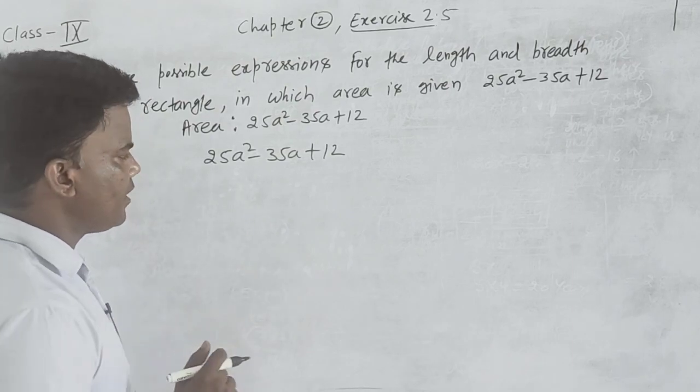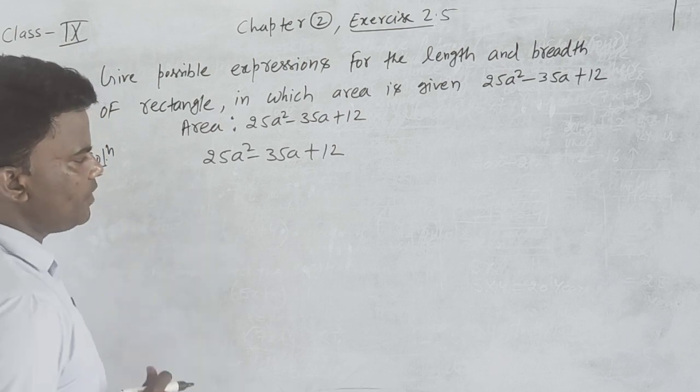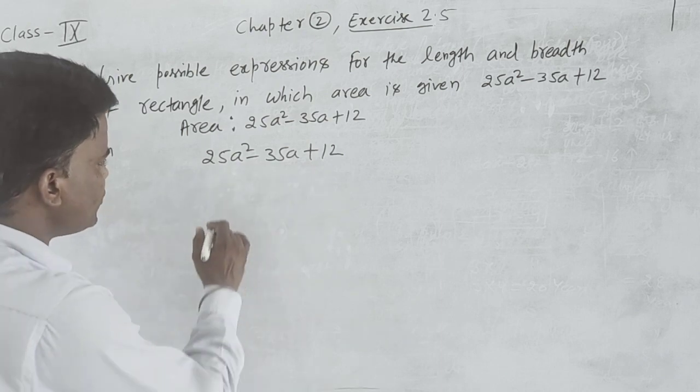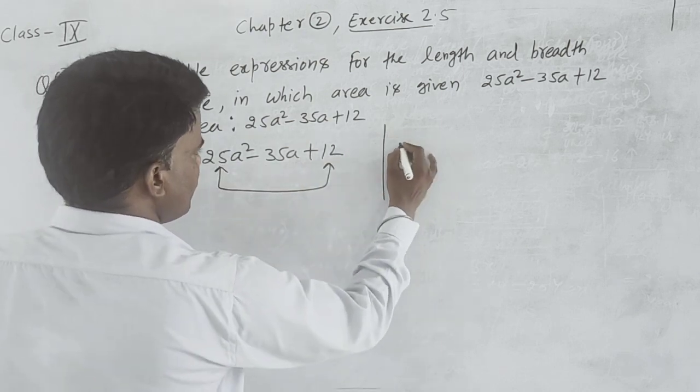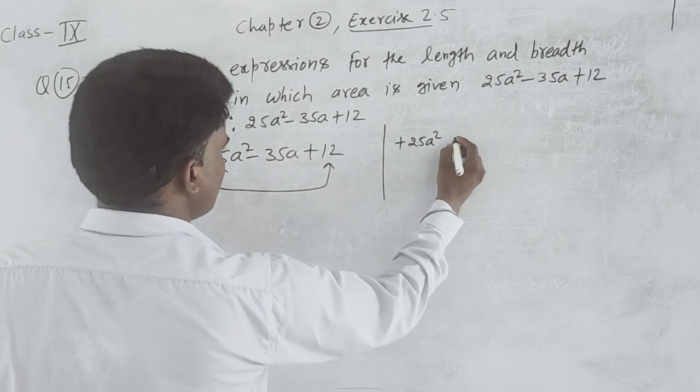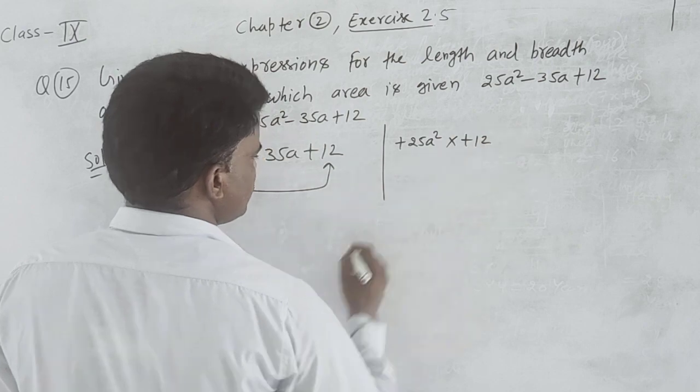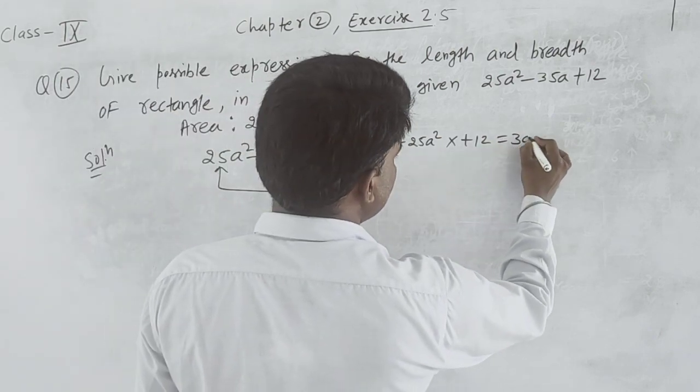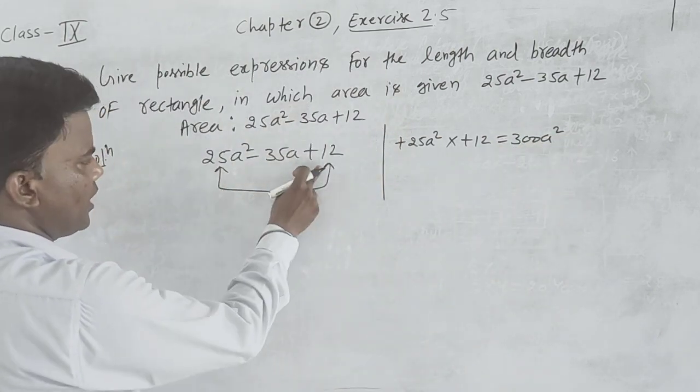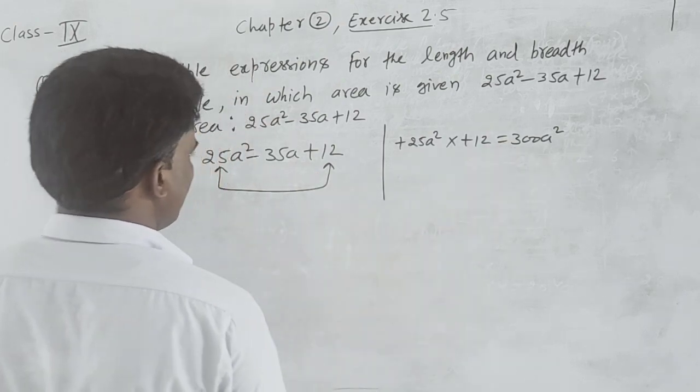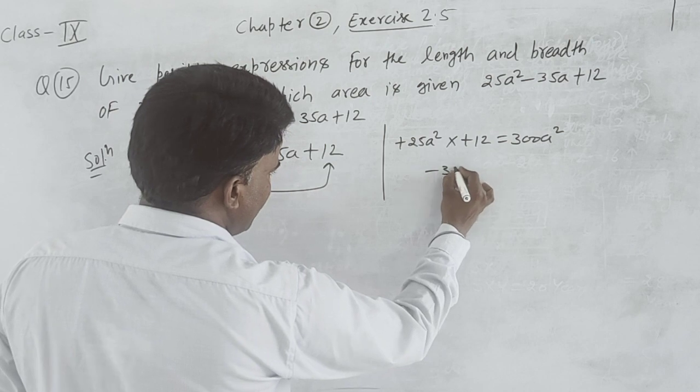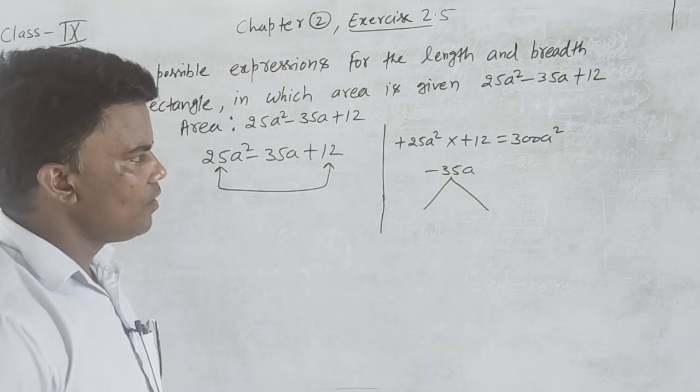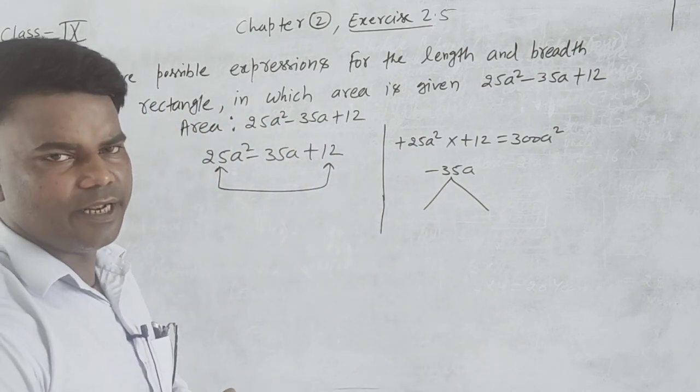We will find factors using split the middle term method. We multiply first and last terms: 25a square multiply 12 gives us 300a square. Now middle term minus 35a, we split into two parts whose sum is minus 35a and product is 300a square.